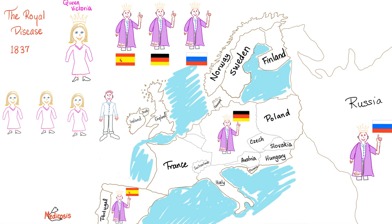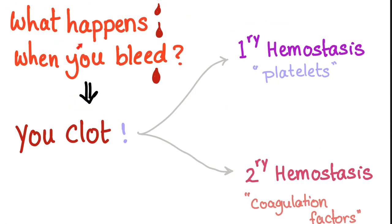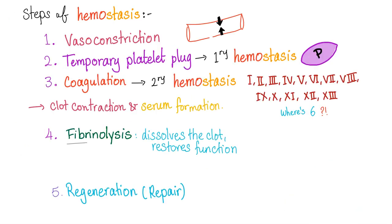Hemophilia is the royal disease. Normally, when you bleed, you should clot, but this is not going to happen if you have a secondary hemostasis defect, such as hemophilia. These are the steps of hemostasis. Hemophilia is a problem here. Problem with factor 8 is hemophilia A, factor 9 is hemophilia B, and factor 11 is hemophilia C.